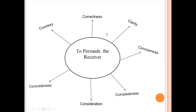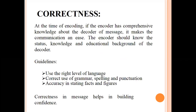The Seven C's are: courtesy, correctness, clarity, conciseness, completeness, consideration, and concreteness. We are going to study all of these one by one and try to understand them so we can apply them in our effective communication with others.